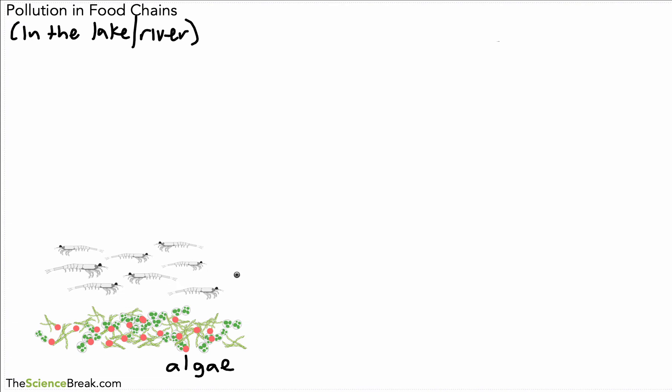That algae is going to be eaten by a type of living thing called plankton. This is a type of living thing that eats the algae. That plankton is also food for other living things though. So it's got the insecticide in its bodies or in their bodies.